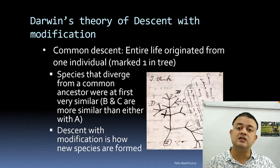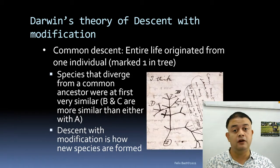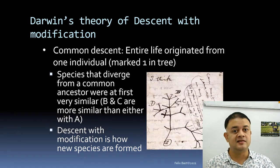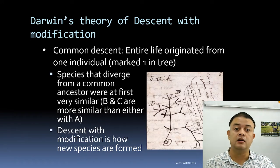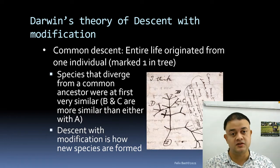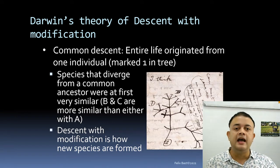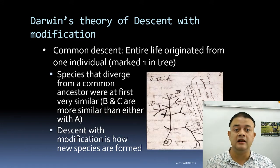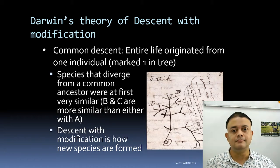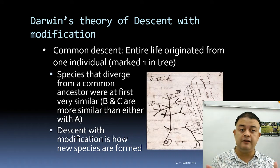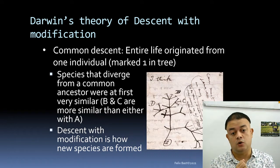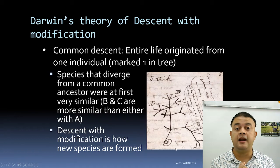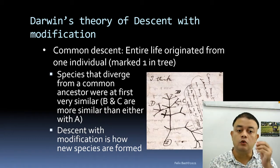Darwin first wrote about the theory of descent with modification, which is the most important aspect of his work. This theory is what irked most religious stalwarts, as Darwin was an atheist and his theory immediately challenged the view of Abrahamic religions. Common descent means all life originated from one individual — one root in the tree of life.